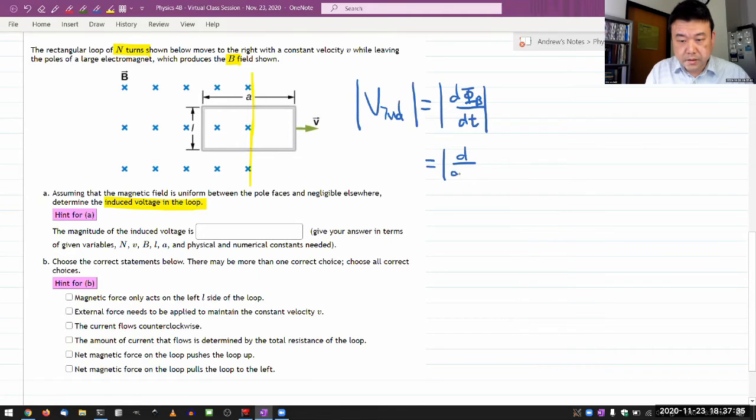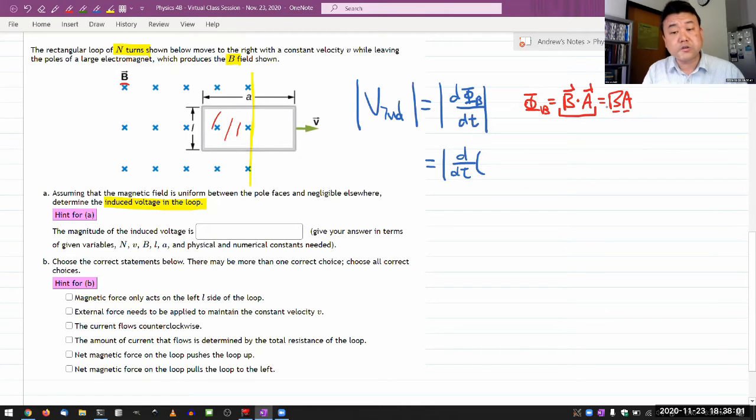Time derivative of... the full mathematical expression for the flux is B as a vector, dot product to be the A. Here, what I confirm is that the area here is perpendicular to the magnetic field. So I can simplify this as field times the area. But please remember that this is a dot product; the relative directions do matter for other questions you might see. So the time derivative of magnetic field times the area.